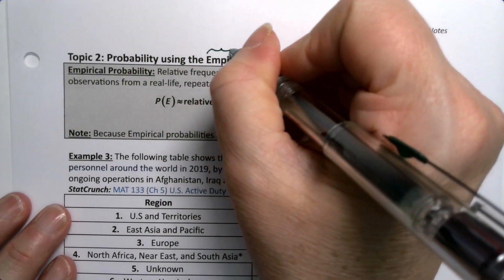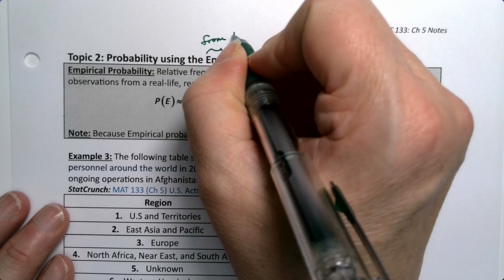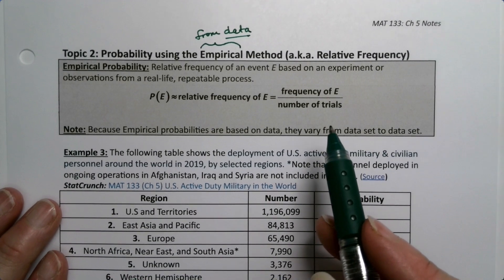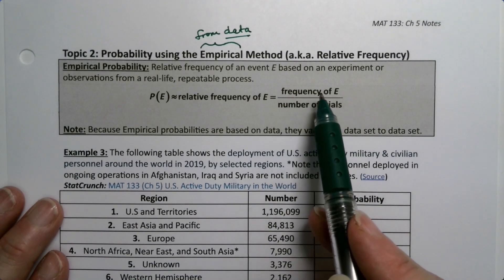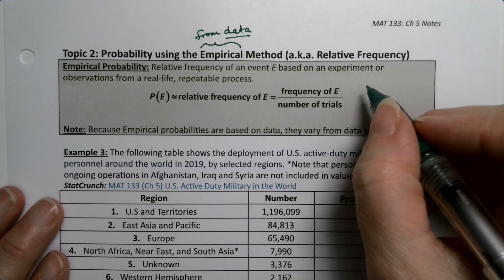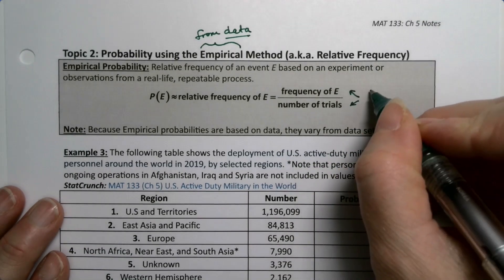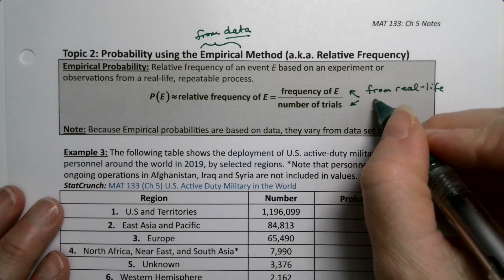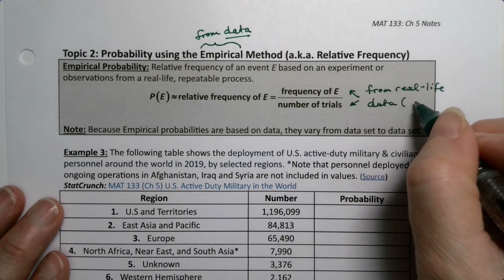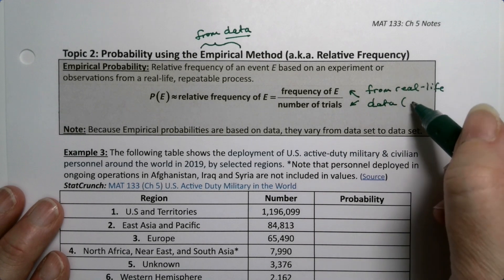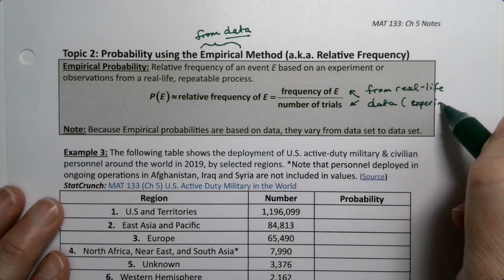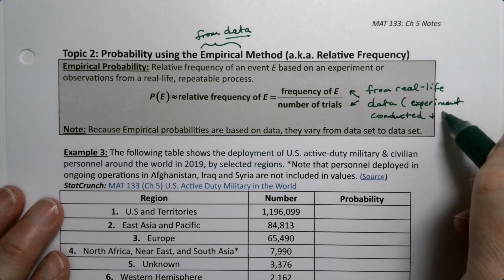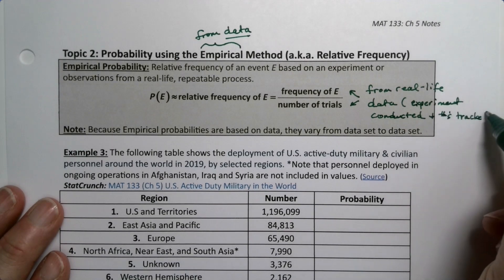Empirical should be something you've heard of in science class. What it means is it's from data. In other words, somebody's actually going to conduct the experiment and count the number of events in E as well as the number of trials. So these numbers will come from real-life data because somebody actually conducted the experiment and the numbers were tracked.